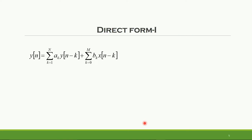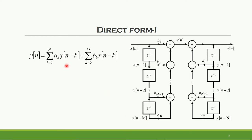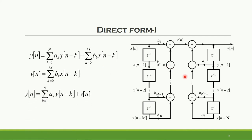Direct Form 1 structure can be realized using a difference equation as given in this expression. From this expression, we can directly draw a Direct Form 1 structure where we declare one intermediate variable V of N. Thus, an intermediate signal V of N is a function of past input samples and the corresponding input coefficients, and the total output Y of N is obtained from the intermediate signal V of N and the collection of past output samples which are multiplied with the associated filter coefficients.